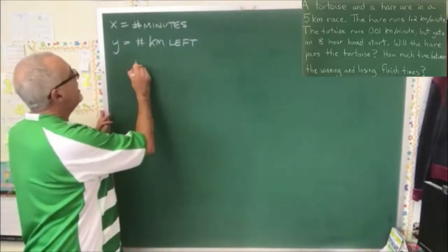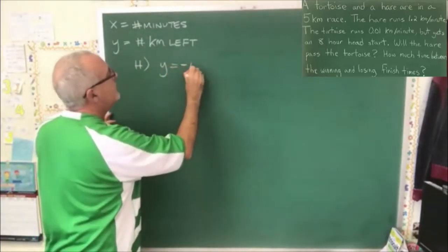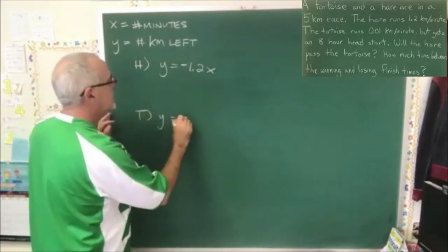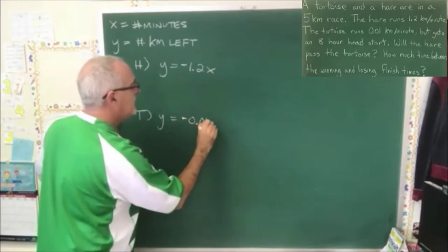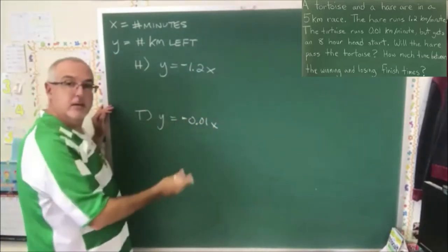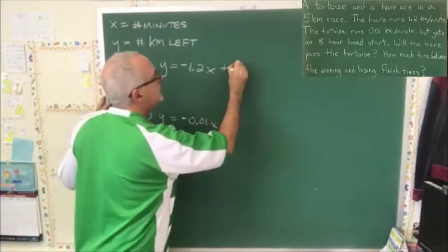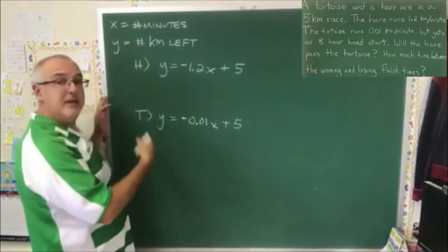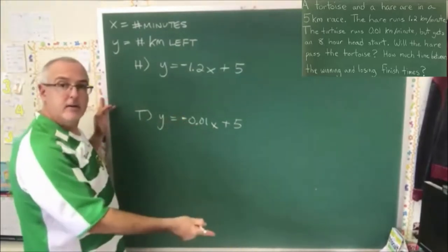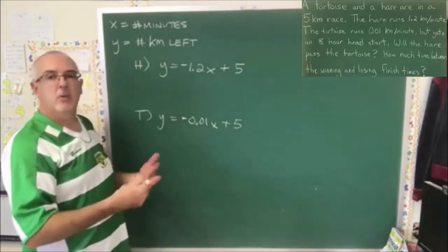The trick with defining variables this way is to realize that as the minutes go by, you have less kilometers left, so that indicates a negative slope. The hare's equation will be y equals negative 1.2x, and the tortoise's equation will be y equals negative 0.01x. But these equations need y-intercepts — and that's going to be plus 5 in both cases, because at the beginning they have 5 kilometers left to run. So that's an initial value, synonymous with a y-intercept.